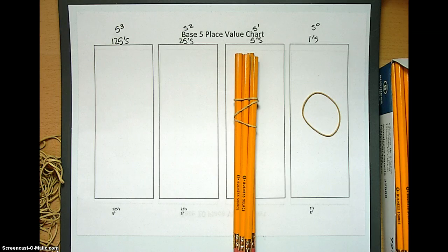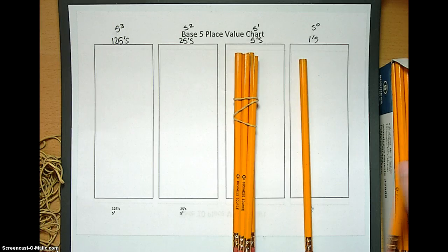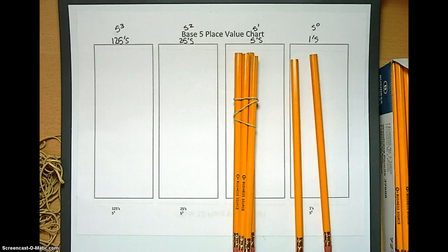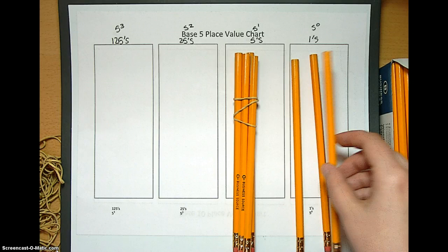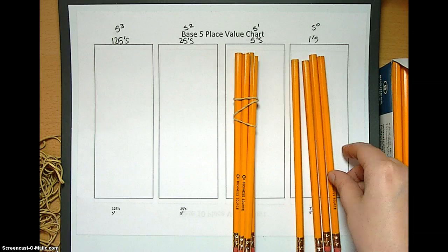Okay, we're going to keep going. So now we have 1, 1 base 5, 1, 2 base 5, 1, 3 base 5, 1, 4 base 5.